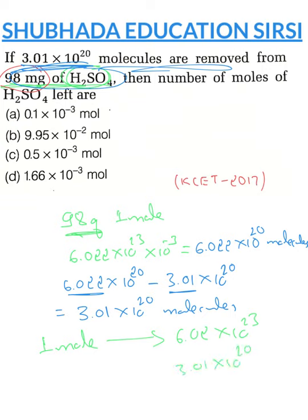Calculate the number of moles: 3.01×10^20 divided by 6.02×10^23. I made a small mistake - it's 3.01×10^20. So finally I should get 0.5×10^-3.